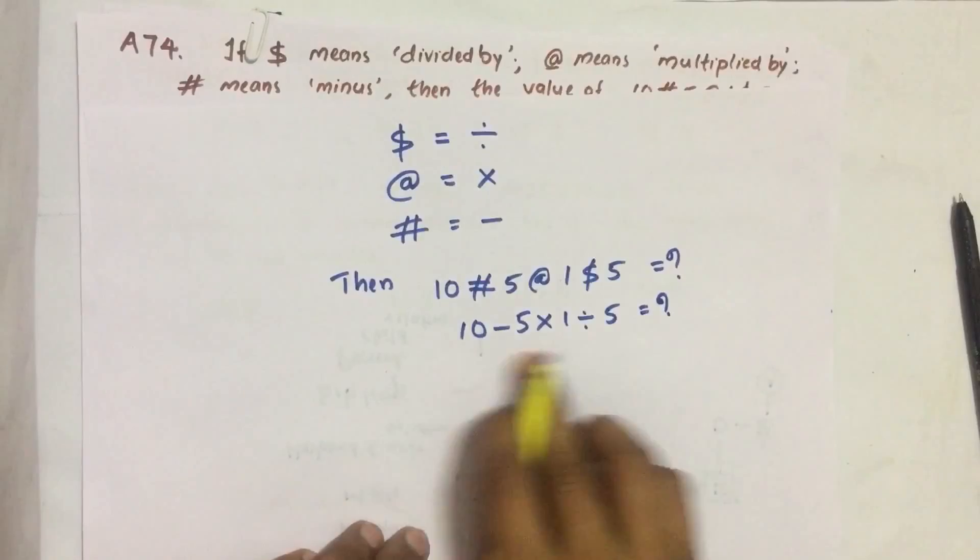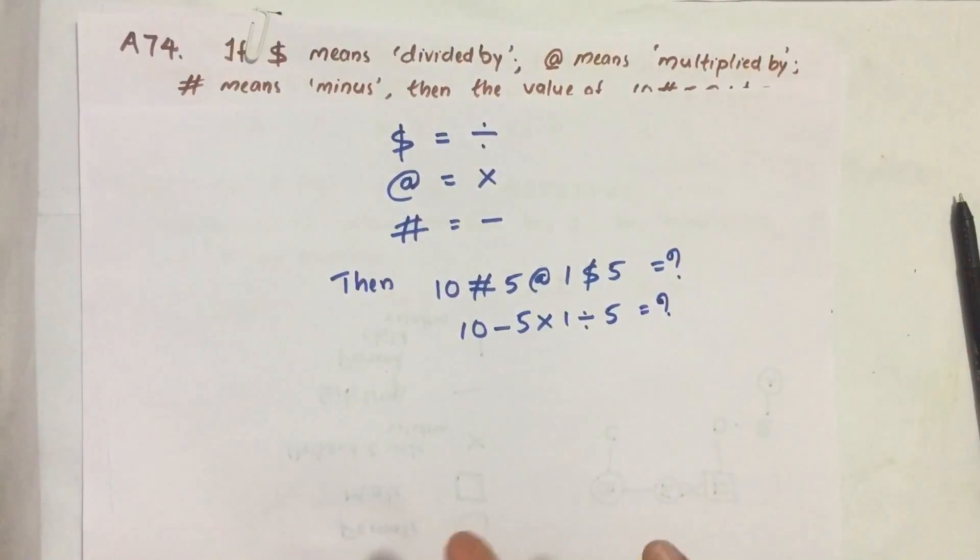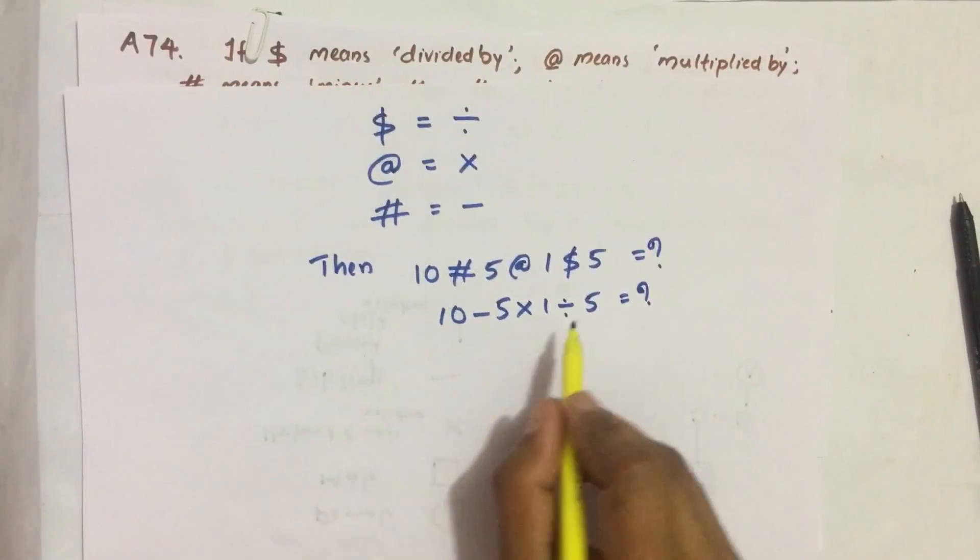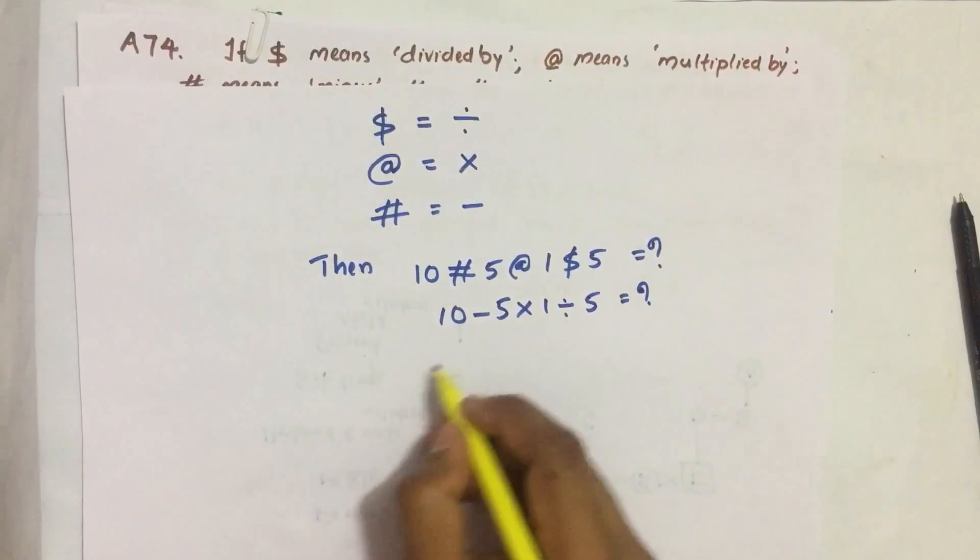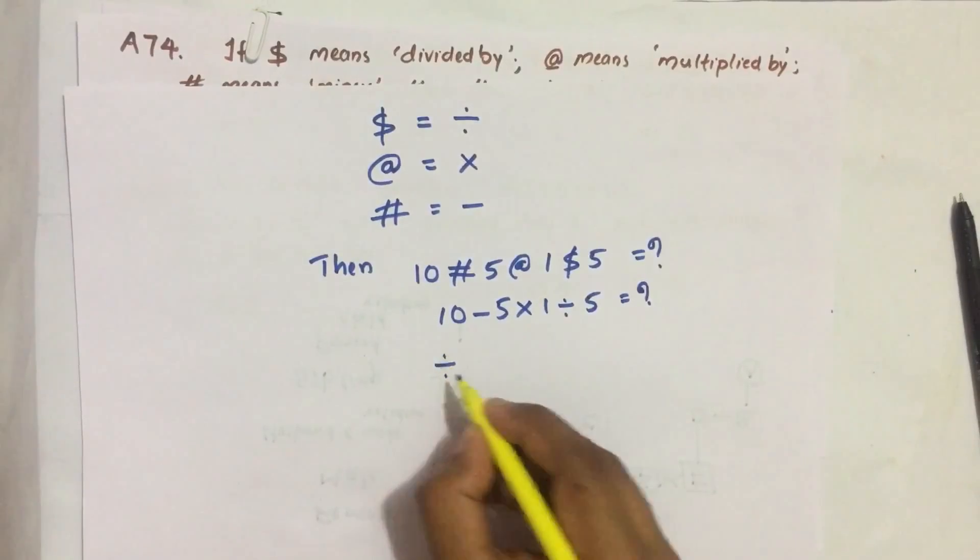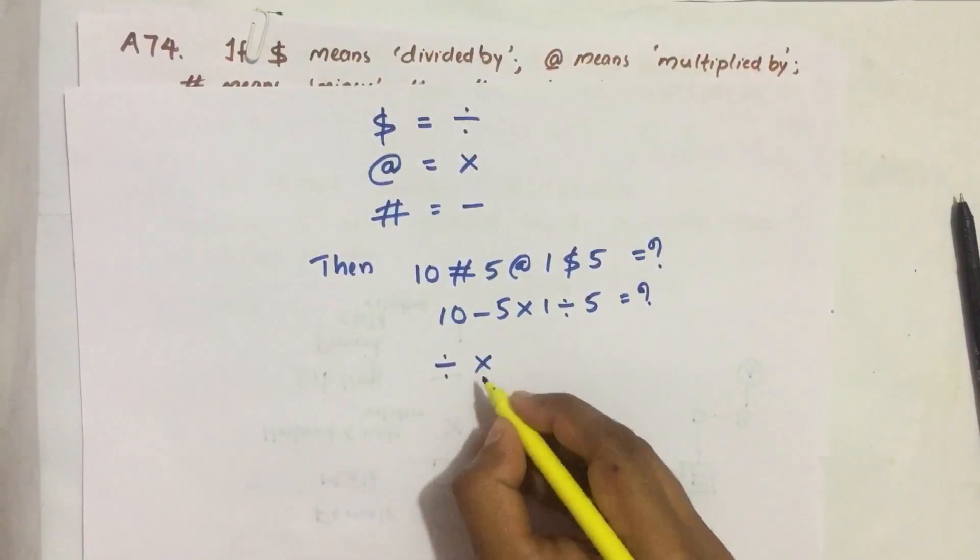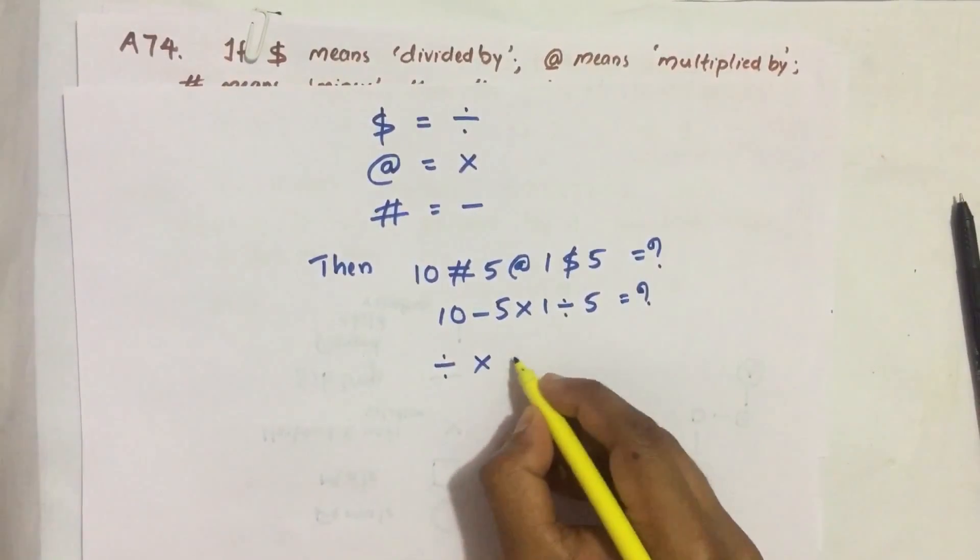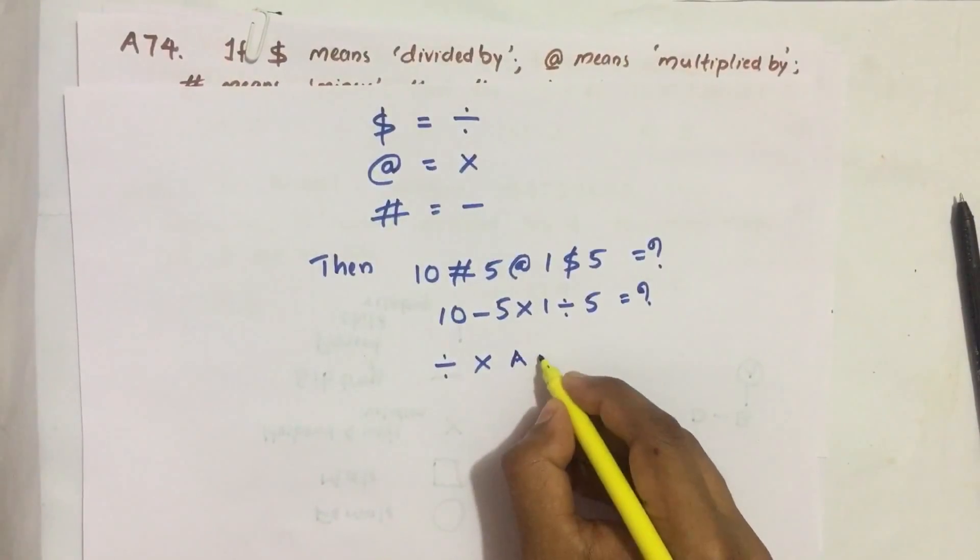So to solve this question, we need to know the BODMAS rule. Which one we do first? So according to BODMAS, first we do division, then multiplication, then addition, then subtraction.